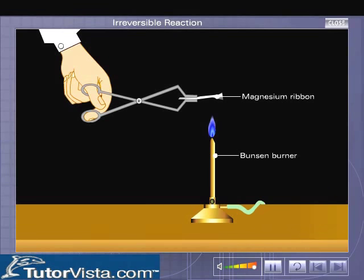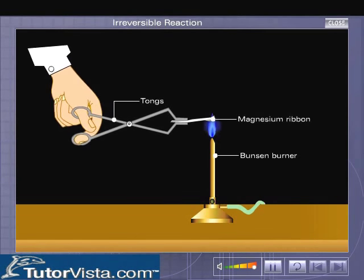Hold one end of it with a pair of tongs and heat the other end over a Bunsen burner or a spirit lamp as shown here.